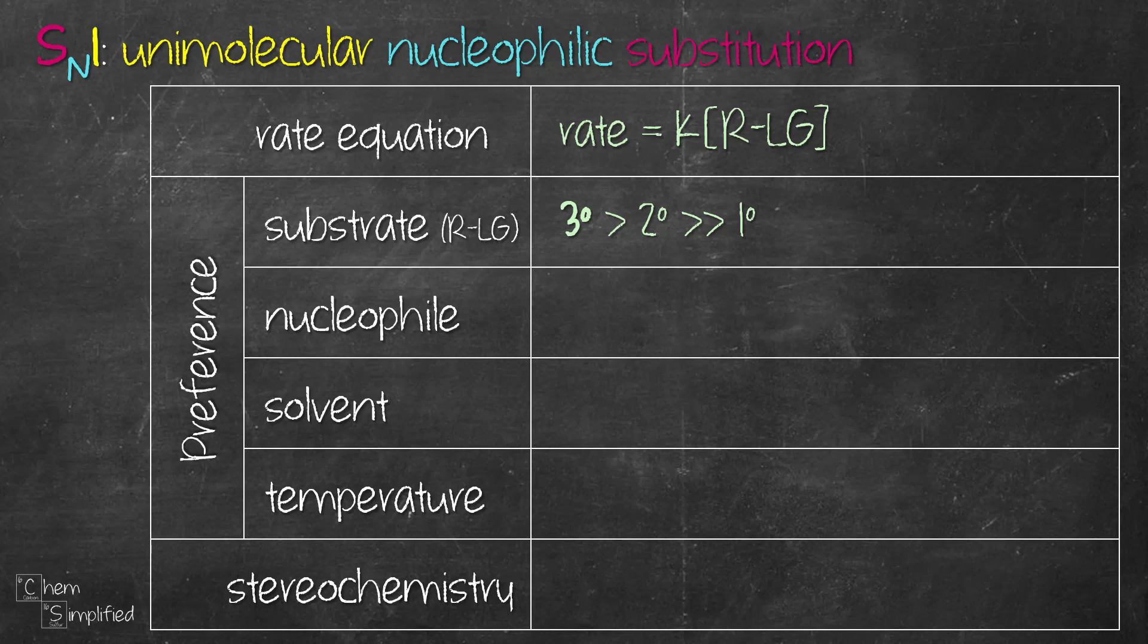As for the nucleophile, strong ones will favor SN2 reaction, therefore weak nucleophiles will go for SN1 reaction. Normally the nucleophiles for SN1 are neutral molecules like water and alcohols.